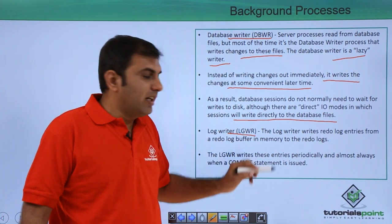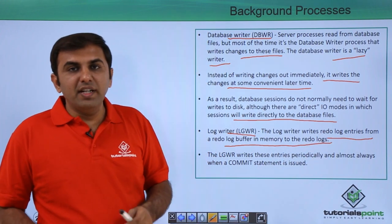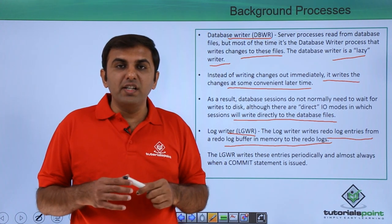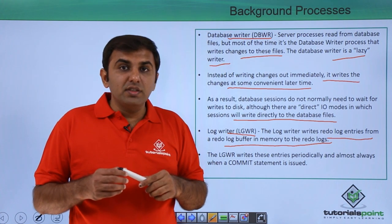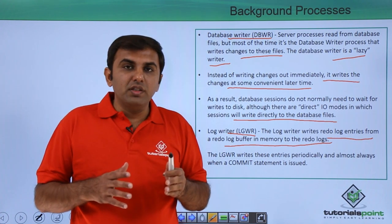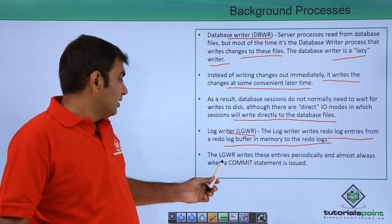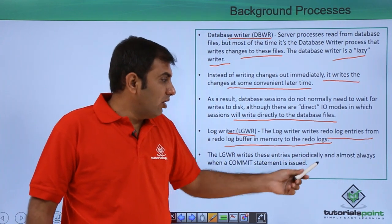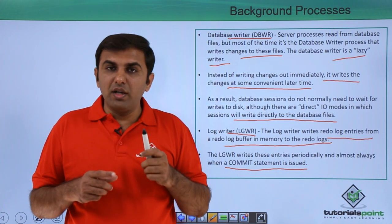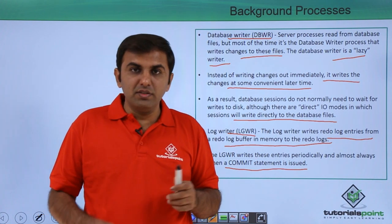Next is the log writer process (LGWR). The log writer writes redo entries from the redo log buffer in memory to the redo logs. Whatever transactions are going on — CREATE, ALTER, DROP, TRUNCATE, INSERT, UPDATE — everything is recorded in the redo. The redo information available in the redo log buffer (an SGA component) is written to the redo log file by the log writer background process. The log writer writes entries periodically, and always when a COMMIT statement is issued — immediately writing data from the redo log buffer to the redo log file.